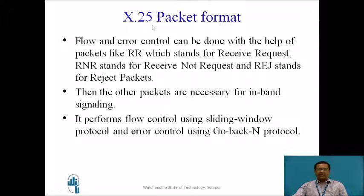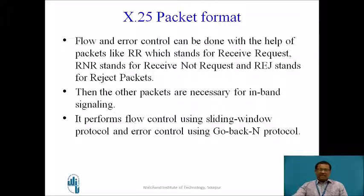Now let us see in detail the X.25 packet format and how error control is done. Flow and error control can be done with the help of packets like RR, which stands for Receive Request; RNR stands for Receive Not Ready; and REJ stands for Reject packets. Other packets are also necessary for in-band signaling. Flow control is done using these control packets RR, RNR and REJ, whereas other packets are used for in-band signaling.